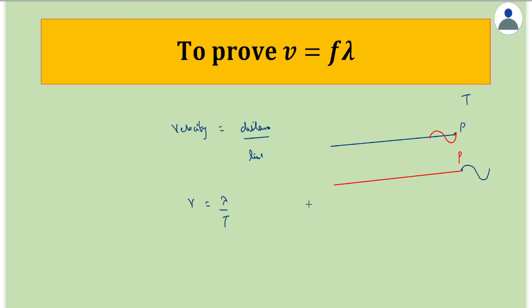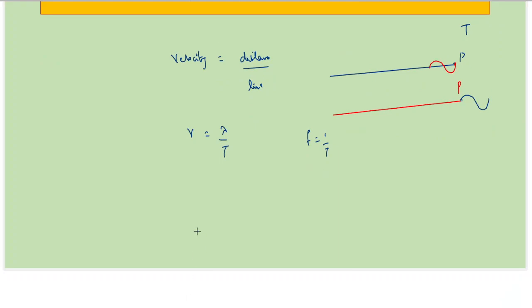But we also learned that f equals 1 over T. Putting this in, we get v equals lambda times f. This is a very important expression.